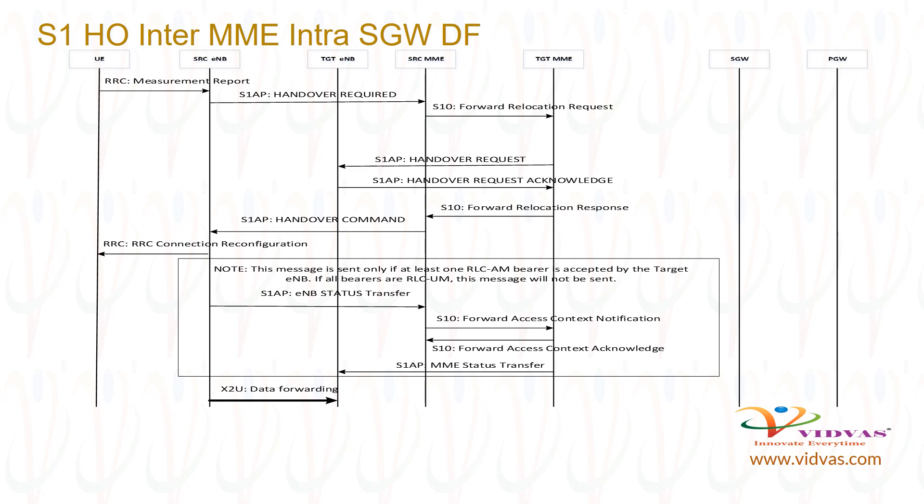Assume UE is attached in LTE network. There is no indirect data forwarding tunnel between source ENB and SGW in this call flow. UE sends RRC measurement report to ENB. Based on the signal strength retrieved in the measurement report, source ENB decides to hand over the UE to target ENB.